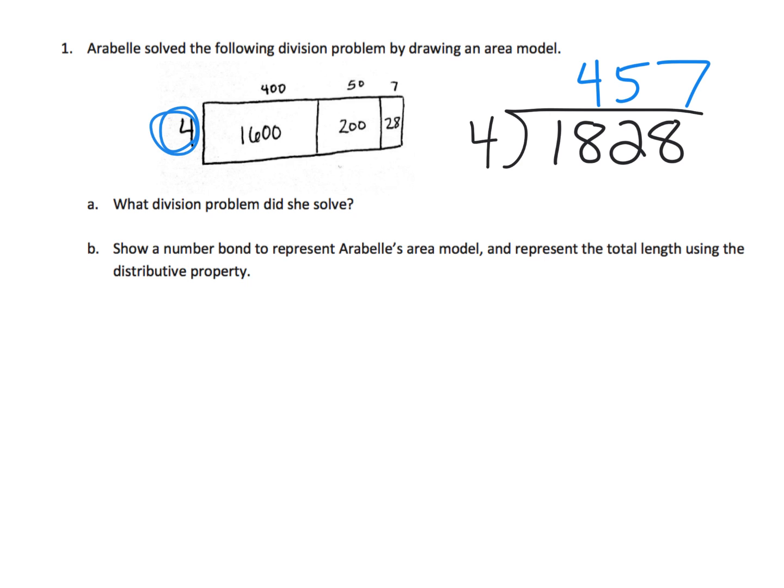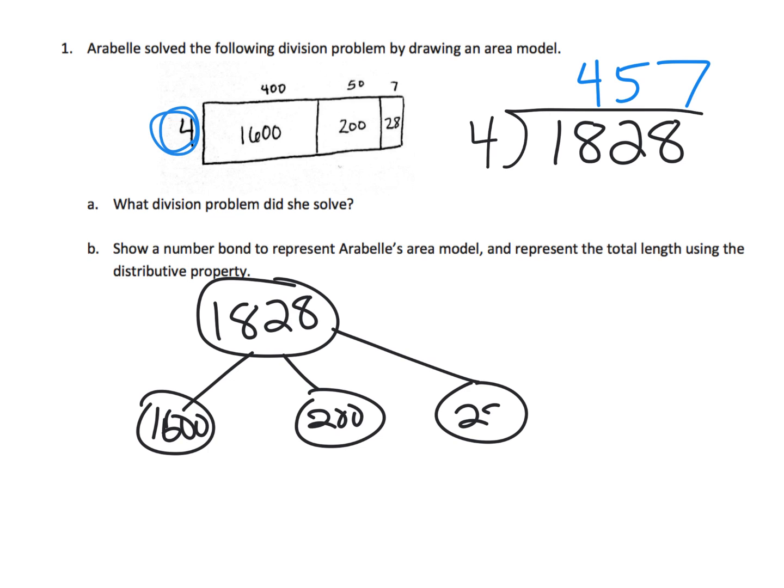Now, we're supposed to show the number bond to represent this area model. So what we're going to do is we're going to start with 1,828. And we see that it got broken up into 1,600, 200, and 28. And then we can use division. And we see that 1,600 divided by 4, 200 divided by 4,